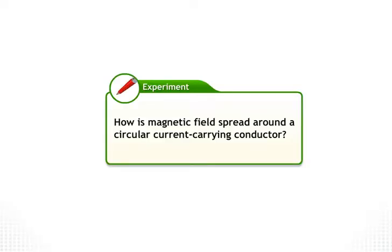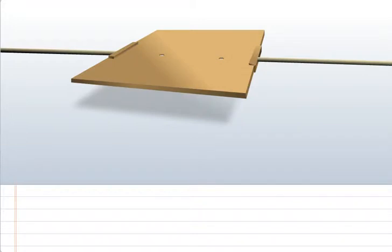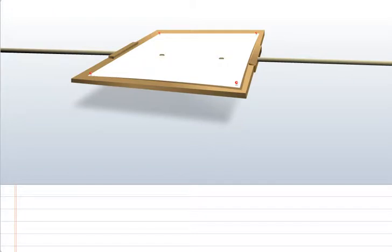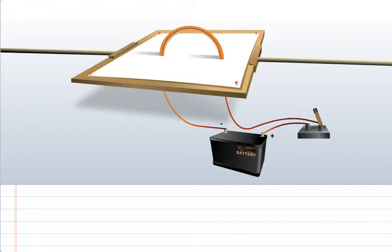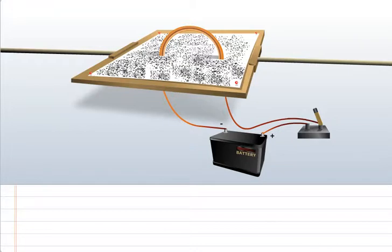We can analyze the magnetic field of a current carrying circular loop through another experiment. We begin by fixing a white sheet on a cardboard and clamping it on a stand. Next, we pass a thick copper wire through two holes on the cardboard so that it makes a curve and forms the shape of a loop. Then, we connect the ends of the loop to a battery and a key. Finally, we sprinkle some iron filings on the board and allow current to pass through the loop.